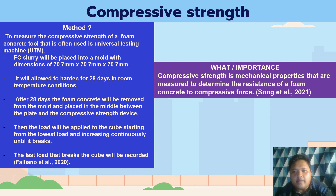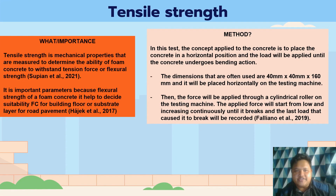Now we look at the mechanical properties of foam concrete. Compressive strength is a mechanical property measured to determine the resistance of foam concrete against a compressive force, measured using a universal testing machine. Tensile or flexural strength is a mechanical property measured to determine the ability of foam concrete to withstand potential flexural forces. It is important because it helps decide whether foam concrete is suitable for use as a building floor, substrate, or road pavement layer. For testing, the method is similar to compressive strength testing but the foam concrete is placed in a horizontal position and a load is applied until the concrete undergoes bending.